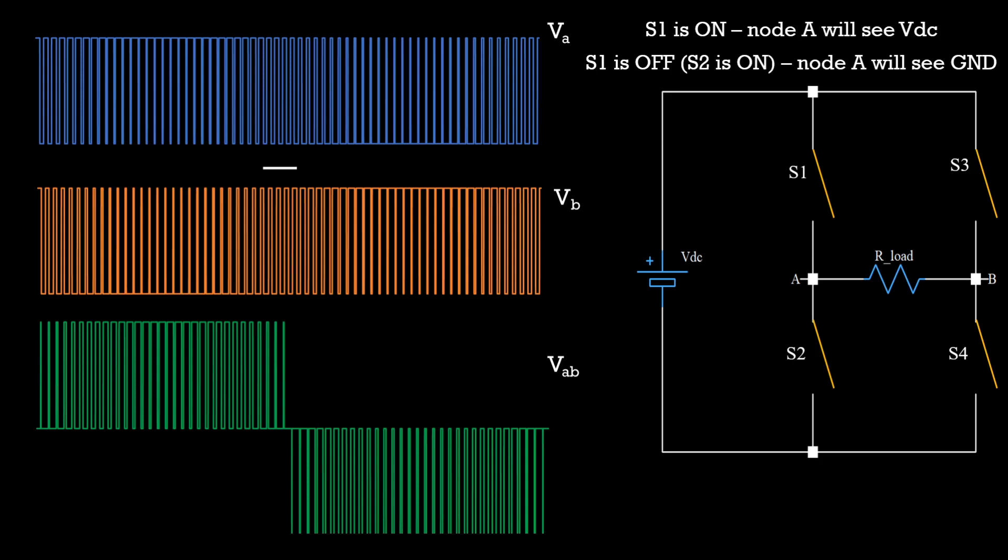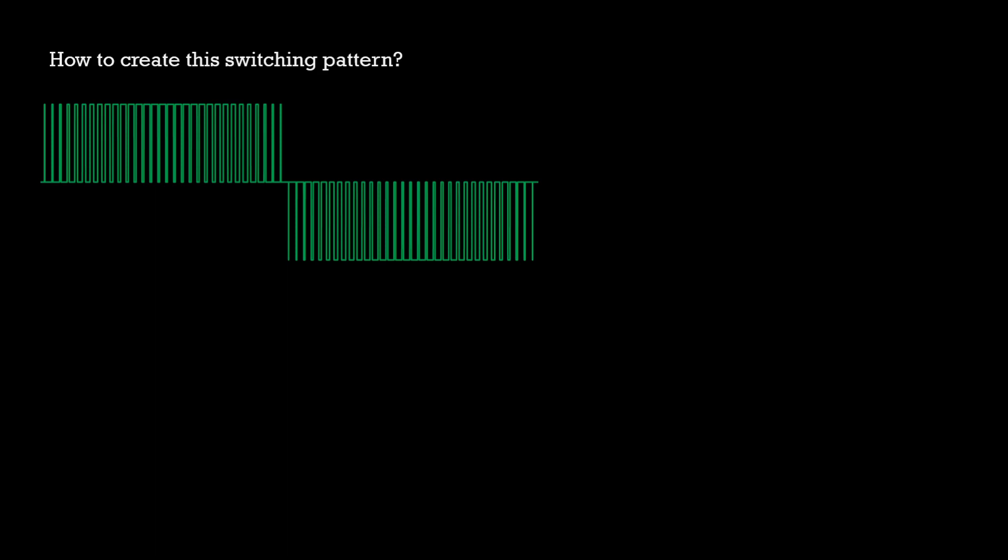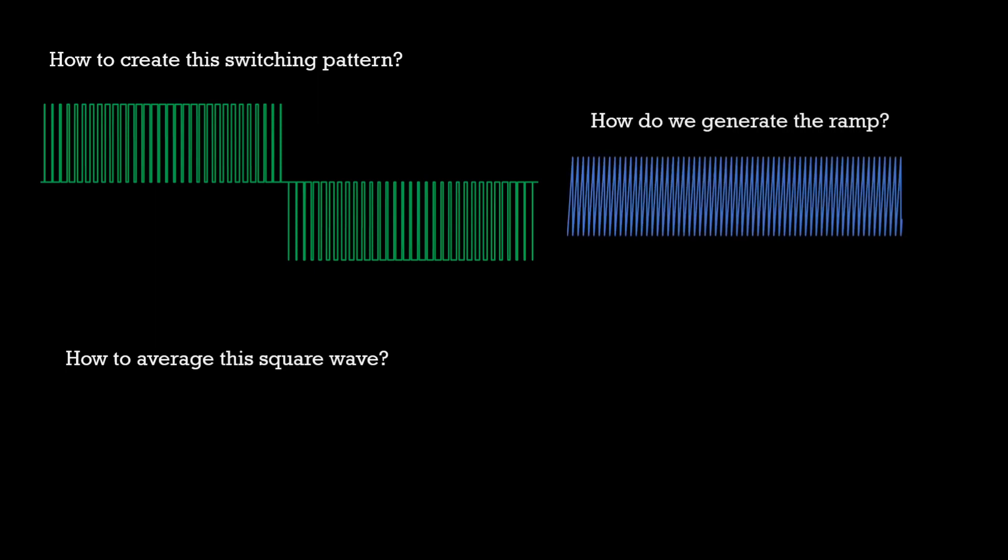So, we started with two questions. How to create the switching wave pattern which we have already achieved and second, how do we average this waveform to get a sinusoidal output. But while answering the first question, two more questions have come up. What is this ramp and what should be its frequency and how do you generate this ramp function? Secondly, from where do you get the reference sine wave?